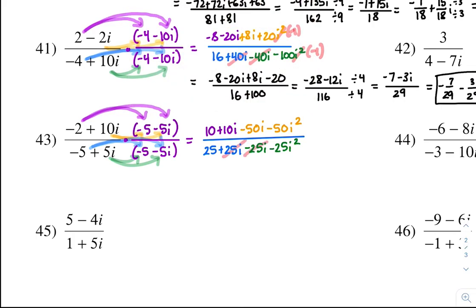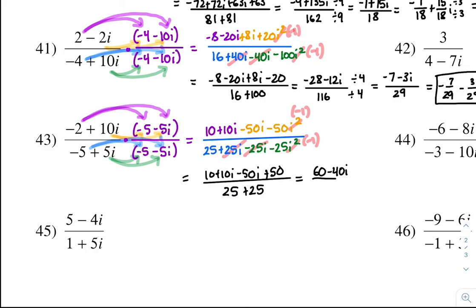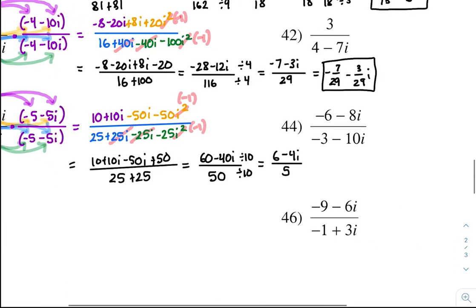Those cancel, and the i squareds become negative 1. So negative 50 times negative 1 is positive 50. All over 25 — those cancel — and negative 25 times negative 1 is positive 25. Simplify the top: 10 plus 50 is 60, and 10i minus 50i is negative 40i. All over 25 plus 25 which is 50. Dividing by 10: 60 over 10 is 6, negative 40i over 10 is negative 4i, and 50 over 10 is 5. In standard form: 6 over 5 minus 4 over 5i.